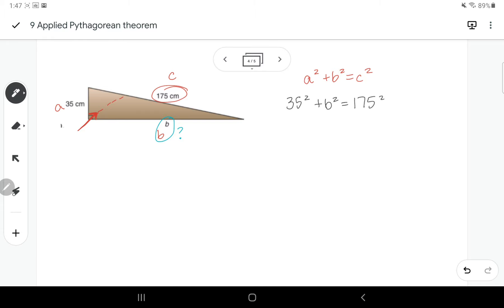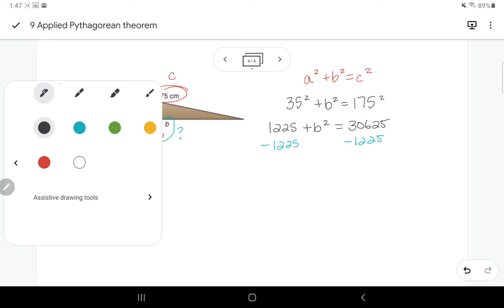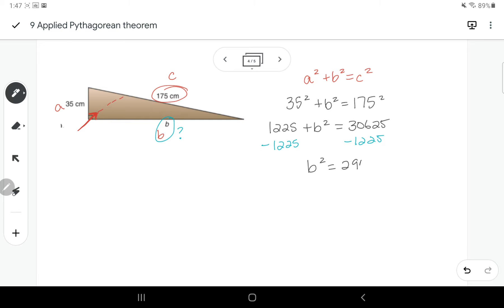So if I put in this information, I get 35 squared plus b squared equals 175 squared. I'm going to do the squareds, 35 times 35, and then 175 times 175, or if you have a squared button on your calculator, you can do that. Now to get b by itself, we have to subtract this 1225. It's positive, so we have to take it away from both sides.